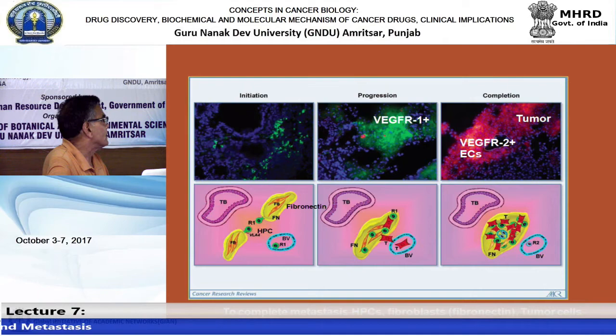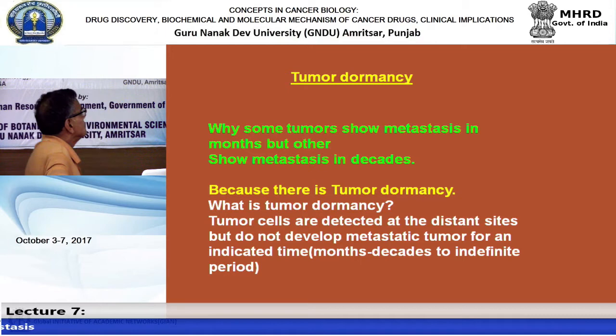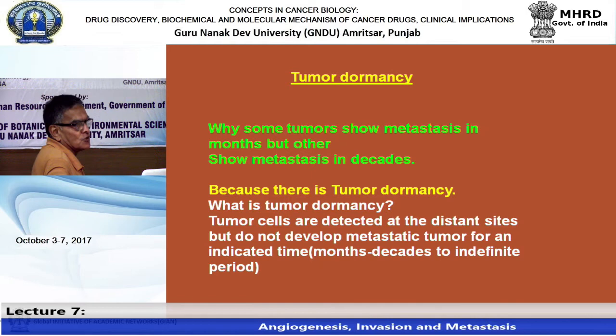Immunofluorescence studies show the same type of pre-metastatic niche data. Tumor dormancy is a new concept explaining why some tumors show metastasis in months while others take decades - why is there a lag?